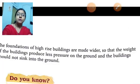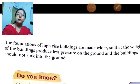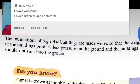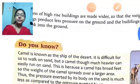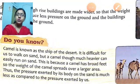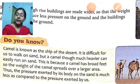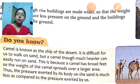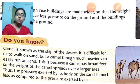The foundation of high-rise buildings is made wider so that the weight of the building produces less pressure on the ground and the building does not sink. The straps of school bags are made thick and wide to distribute the heavy weight over a larger area, reducing the pressure. Similarly, workers carrying heavy loads keep a round cloth on their head to spread the load over a larger area, reducing pressure on the head. A camel has broad feet so its weight spreads over a large area, and the pressure on the sand is much less compared to a person — that is why a camel can easily run on sand.